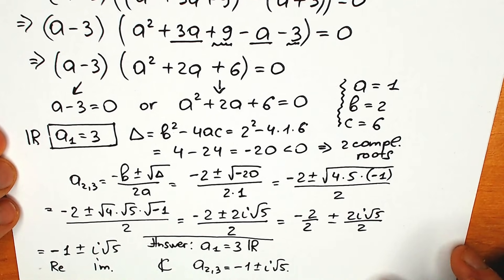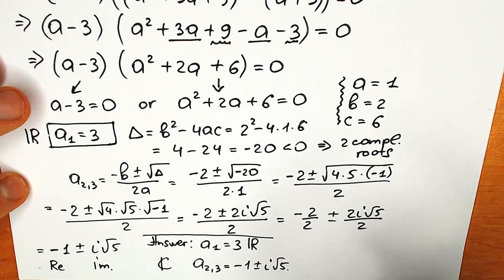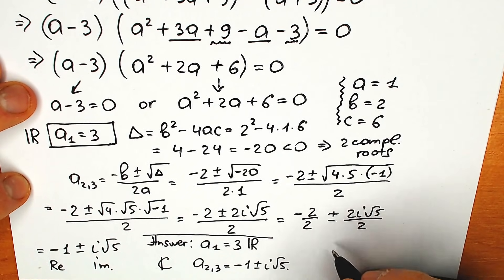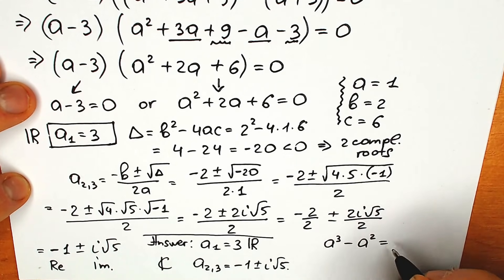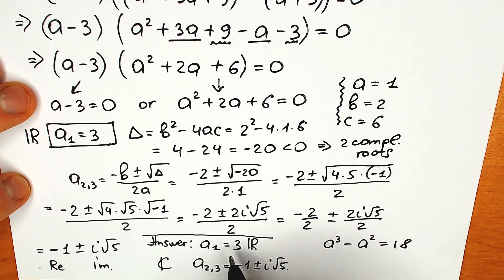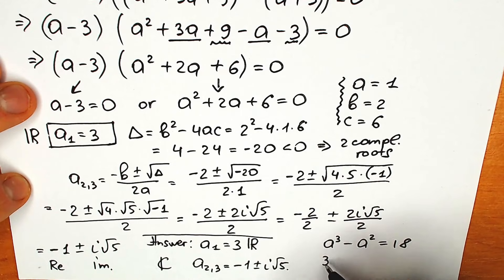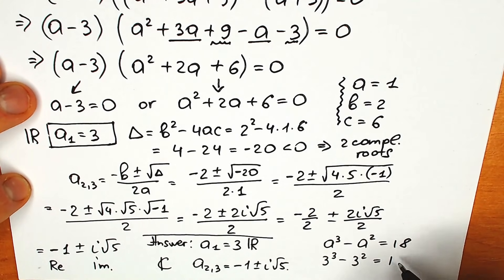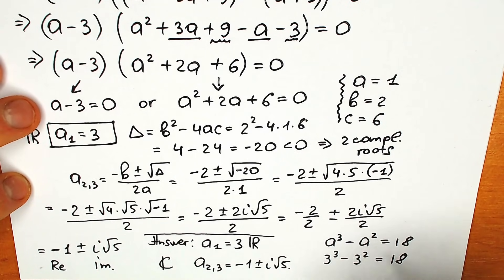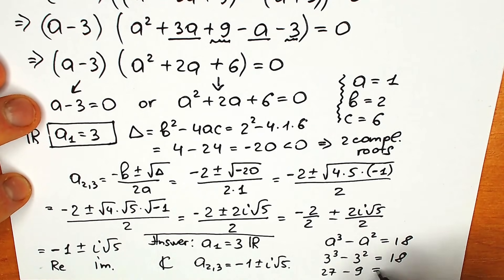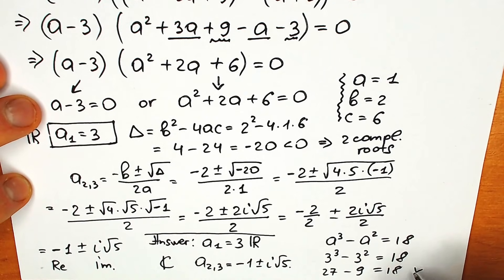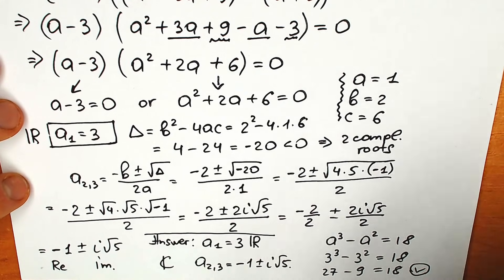Let's quickly verify a₁ equals 3. Going back to a³ minus a² equals 18 and plugging in a equals 3: we get 3³ minus 3² equals 27 minus 9 equals 18. Everything is correct — this is a correct root.